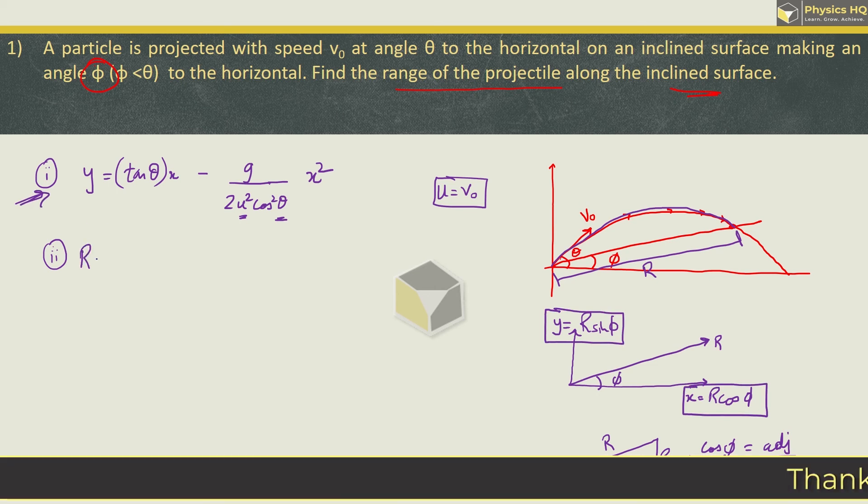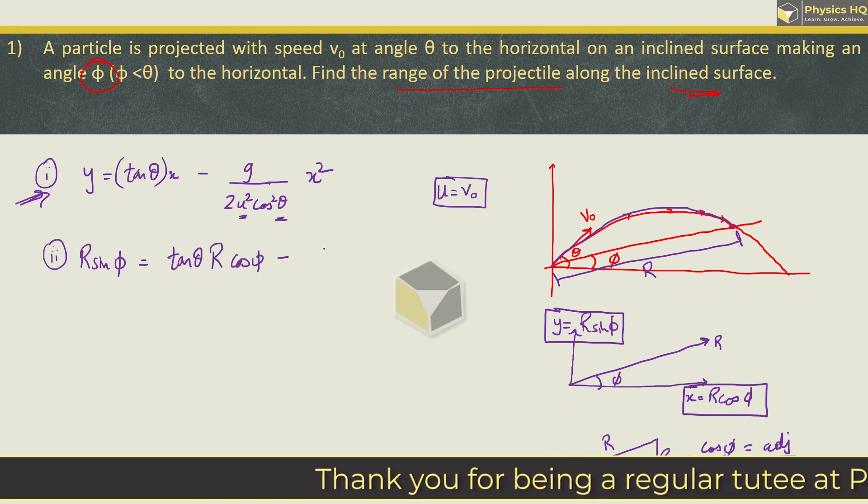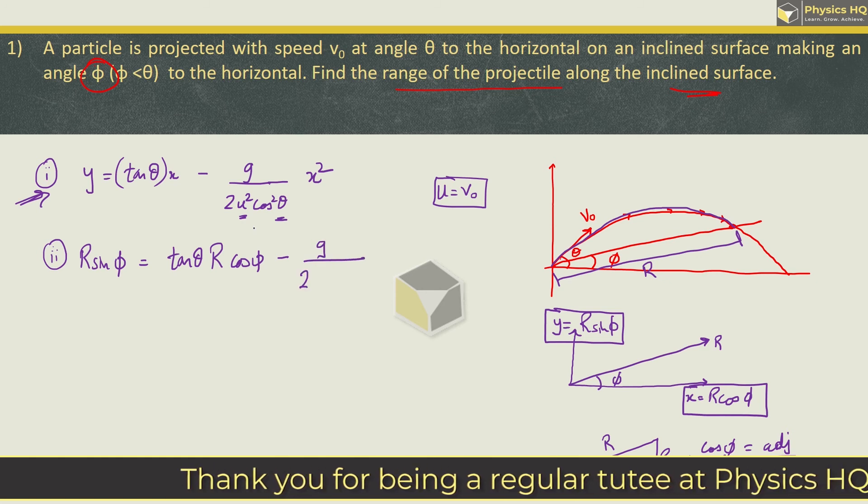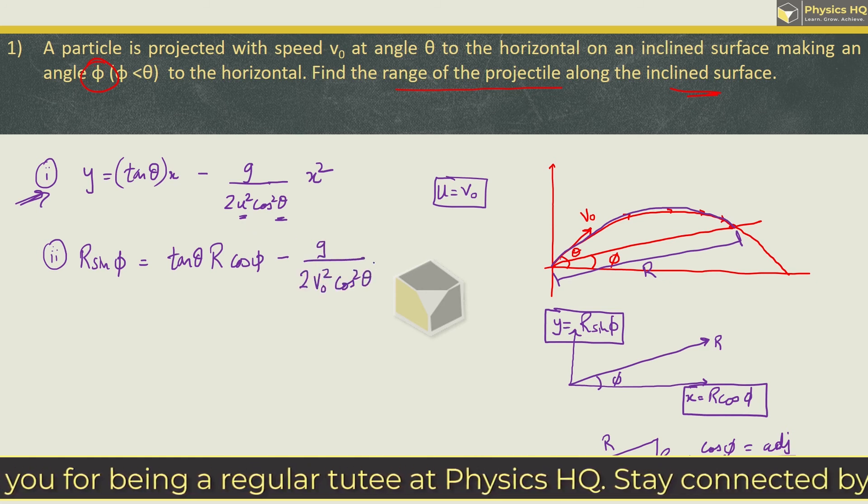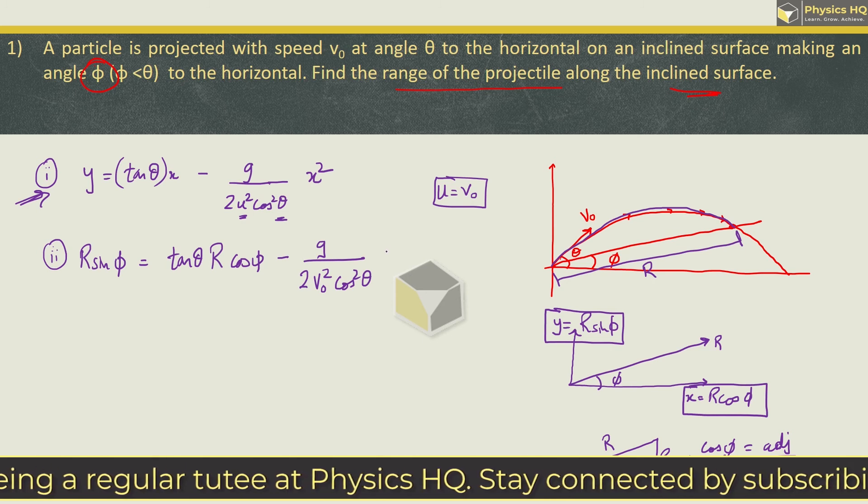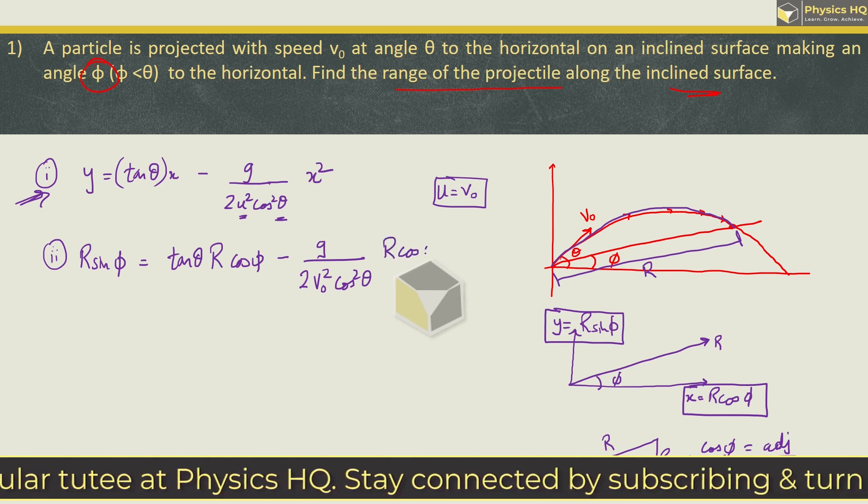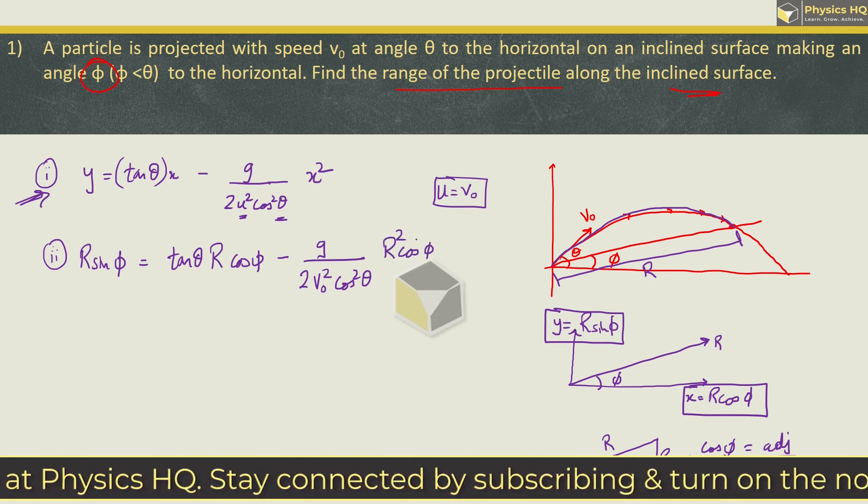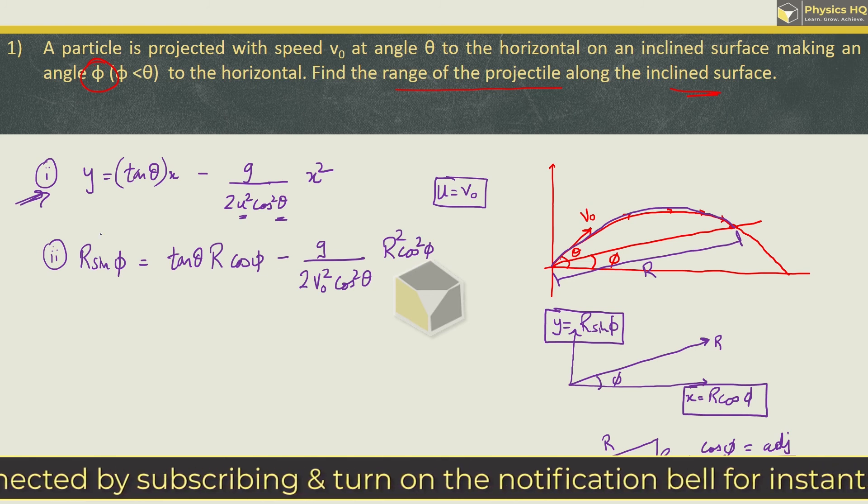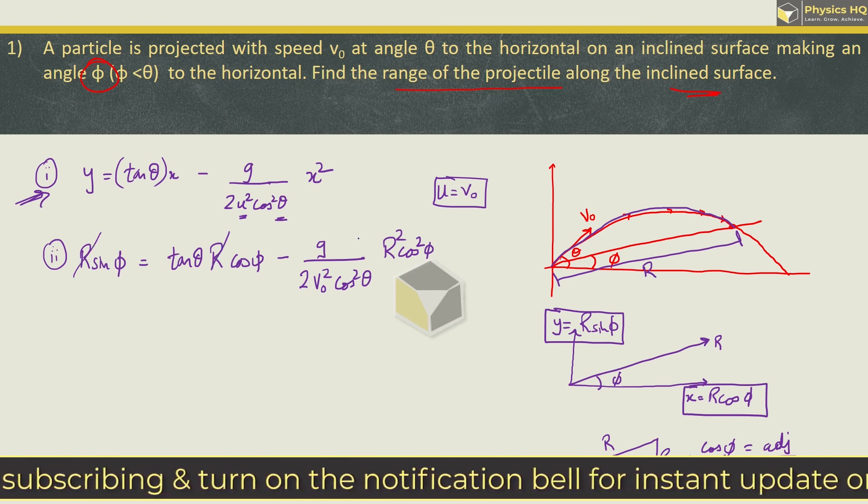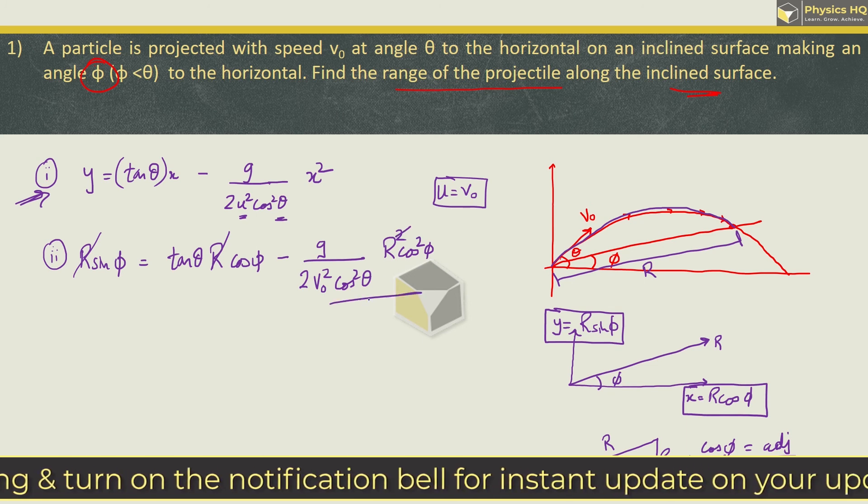So y will put r sin phi. This is equal to tan theta, x will put r cos phi minus g upon 2u square. We will put v0 square cos square theta into x. Once again r cos phi square. It will be r square cos square phi. Now in each term here, if you see r is here. We can cancel out r term from each place.